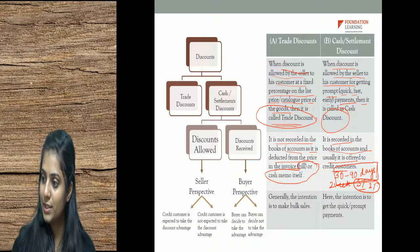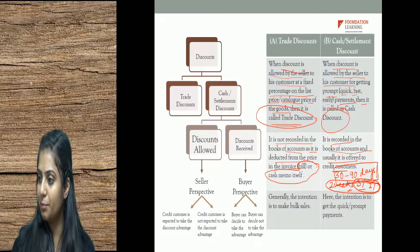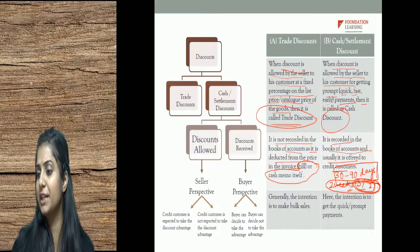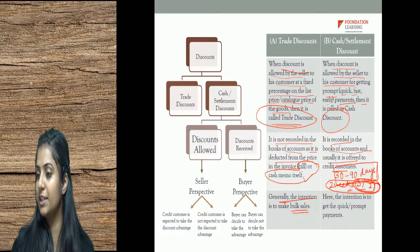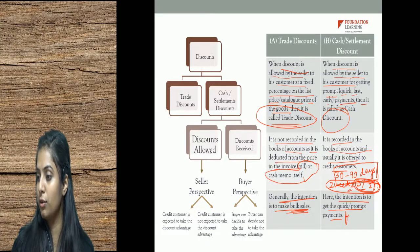Trade discount is not recorded in the books of accounts as it is deducted from the price in the invoice, bill, or cash memo itself. Cash discount is recorded in the books of account and is usually offered to credit customers. The usual credit period is 30 to 90 days. If the customer makes payment within two weeks to avail the 5% or 3% discount, they get the additional discount. But if they pay within the normal or after the credit period, they don't get the discount.